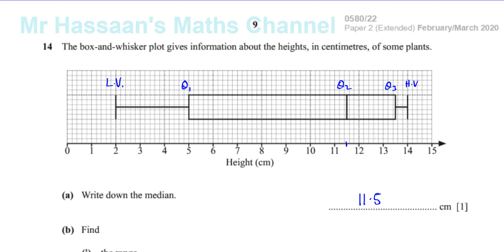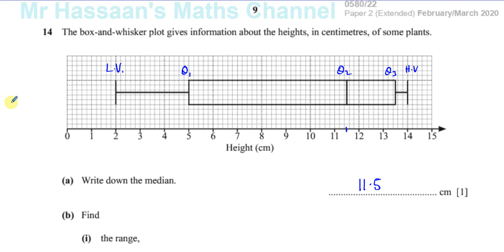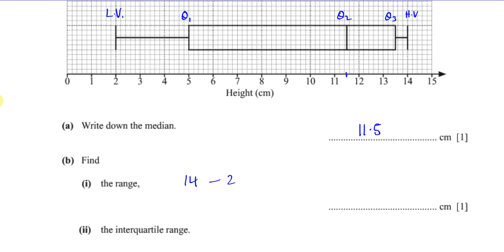Then it says find the range. Now, the range is the difference between the highest value and the lowest value. So you can see here it's going to be 14 take away 2. The highest value minus the lowest value is the range. That's going to give you 12.